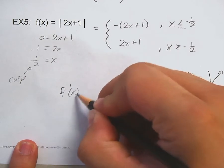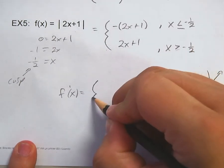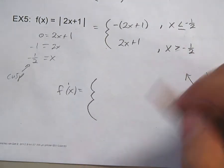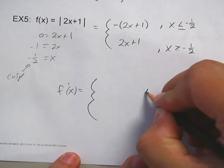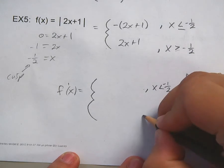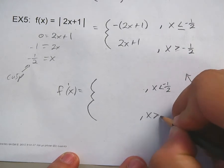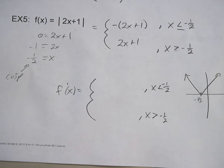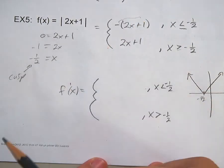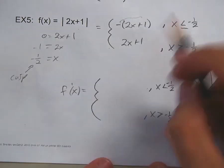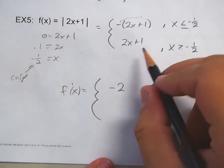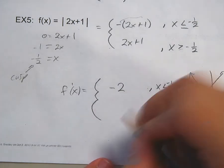Now let's find the derivative. f prime of x — notice these are done the same way as the piecewise at the top. When x is less than negative one half and when x is greater than negative one half: the slope of negative two x minus one is just negative two, and the slope of two x plus one is positive two.